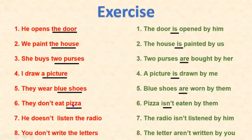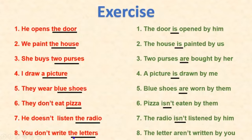Number six: 'They don't eat pizza' → 'Pizza isn't eaten by them.' Number seven: 'He doesn't listen to the radio' → 'The radio isn't listened to by him.' Number eight: 'You don't write letters' → 'Letters aren't written by you.' Don't forget these!